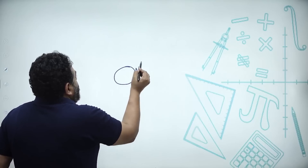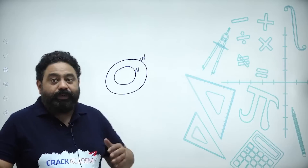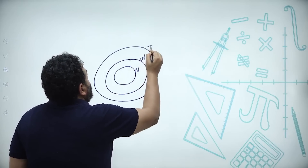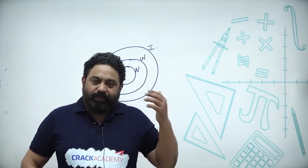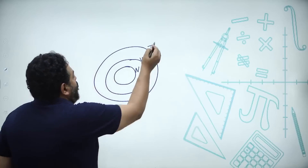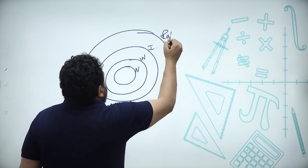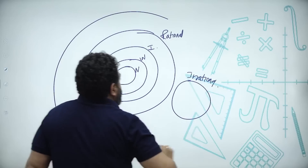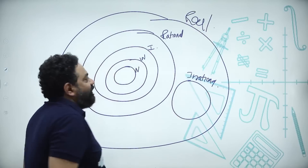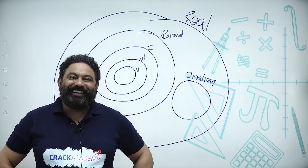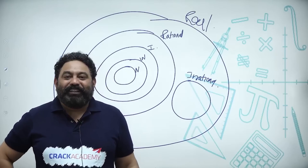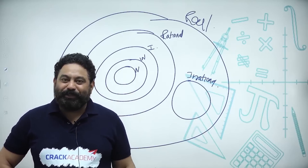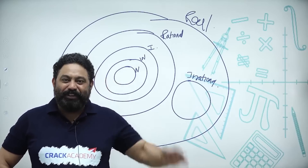Just pay attention — natural numbers are contained in whole numbers, because whole numbers have one more element which is zero. Integers contain whole numbers, because integers include all natural numbers, zero, and negatives of natural numbers. All integers are rational. Rational and irrational are different sets, and once you add them together you get real numbers. It's really important to know what exactly the number system is, because all aptitude-based exams are based on these basics. See you in the next video!